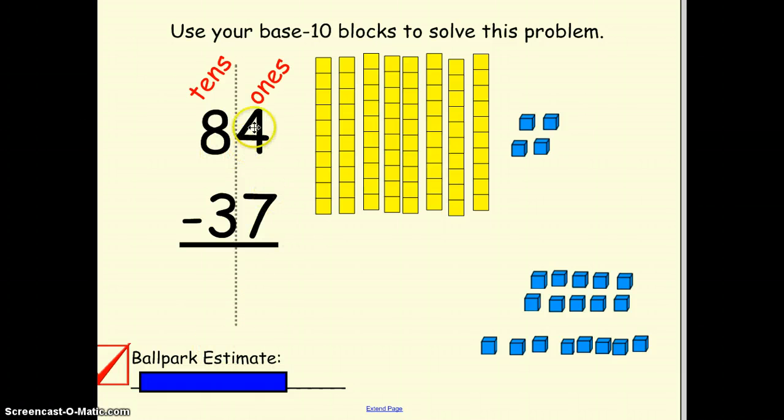Here I have 84, that 4 isn't enough to push it up so I'm going to round down to 80. And 37 here, that 7 is enough, it is past 5 to push it up to 40. So 80 take away 40 gives me 40, so my answer should be close to 40.